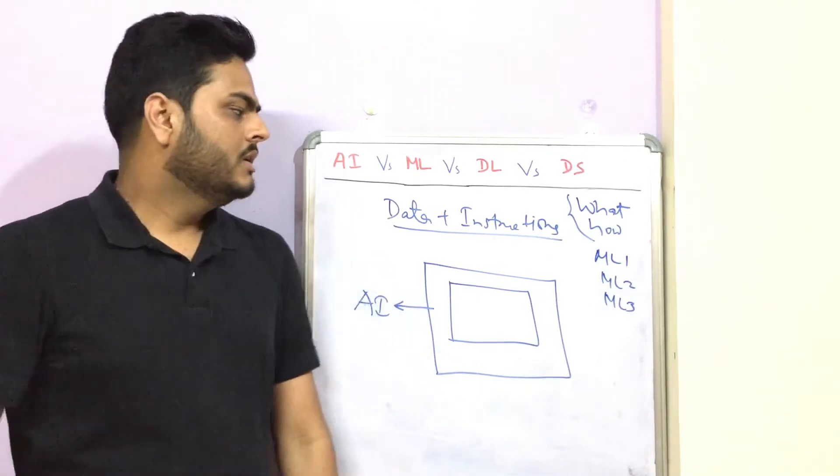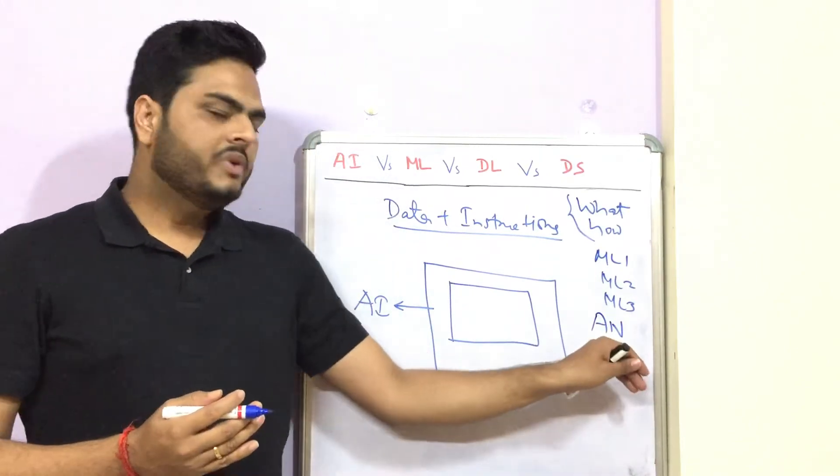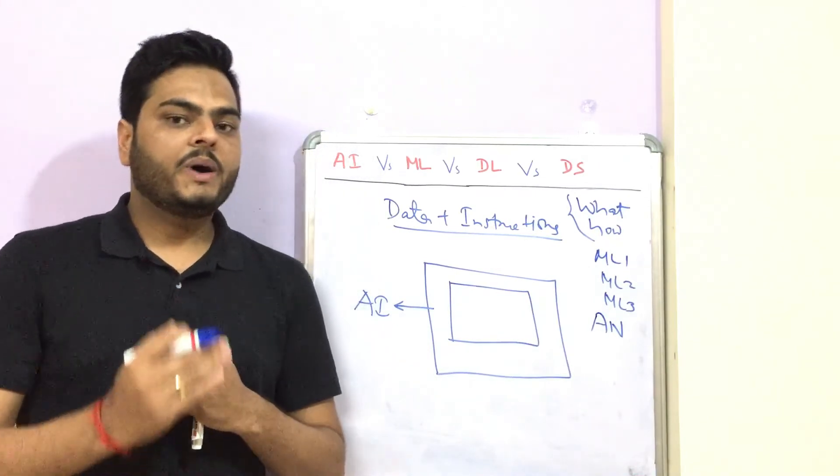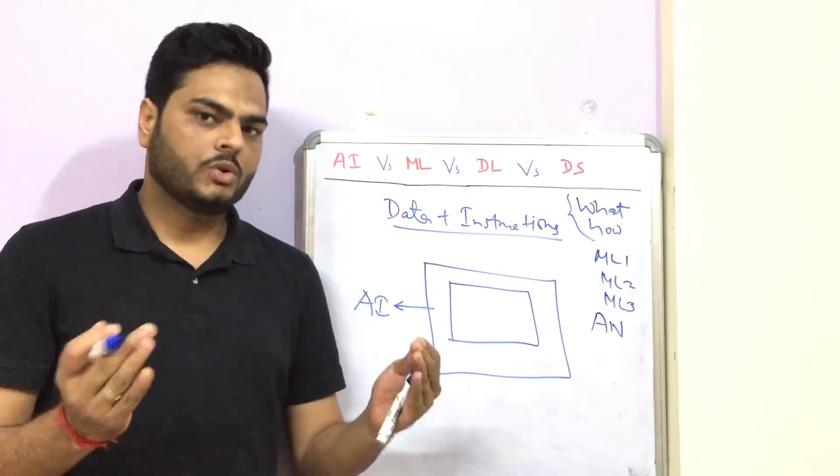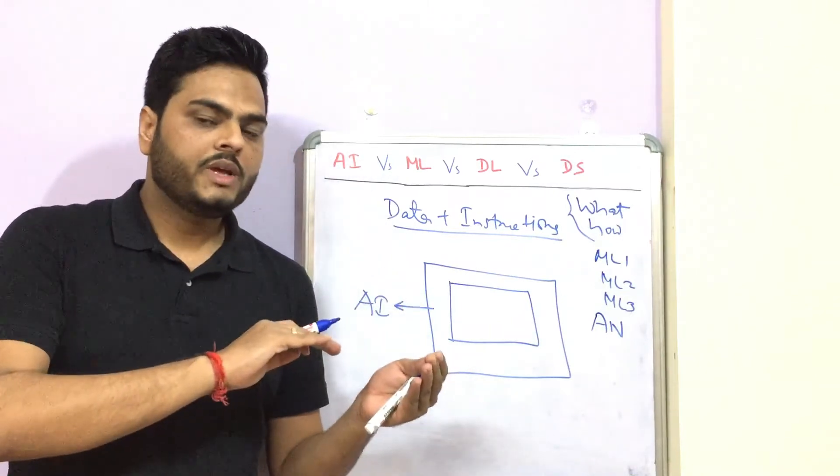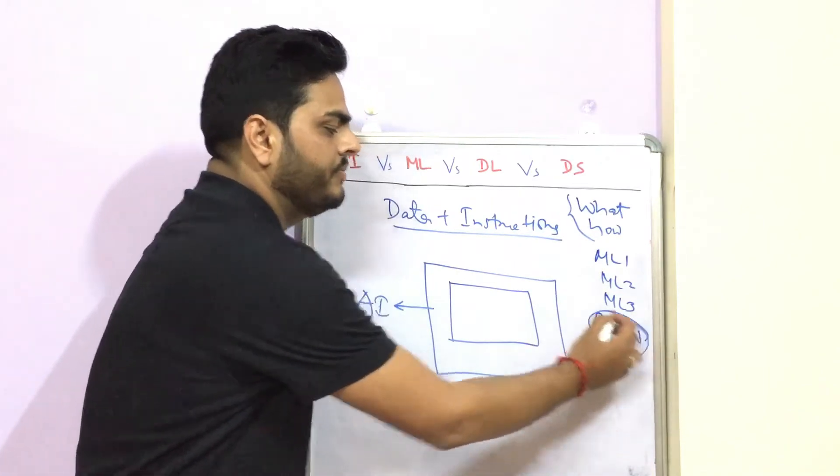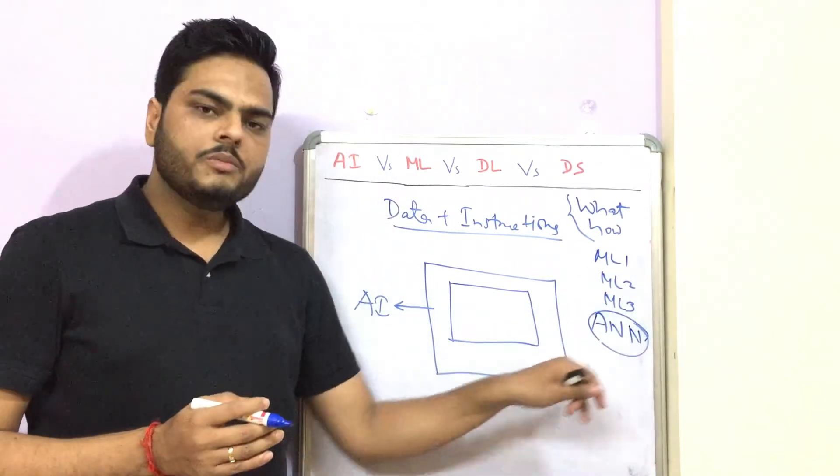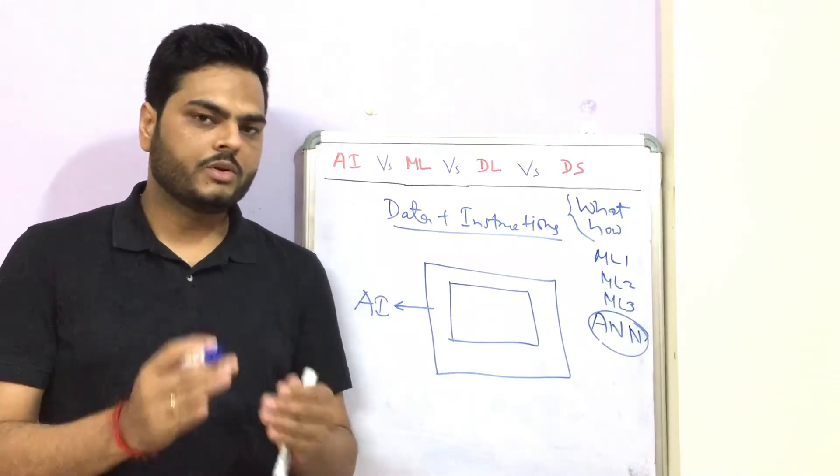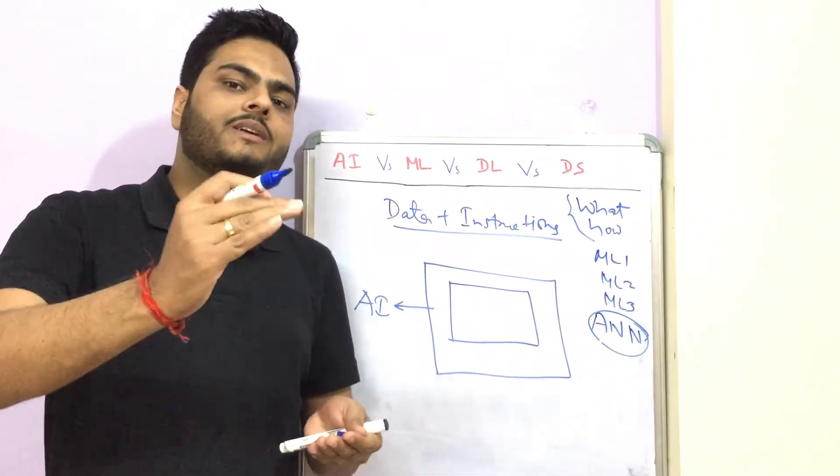This is how biological neuron works. In machine learning there is a technique called artificial neuron. We try to mimic the behavior of biological neuron by creating or by training artificial neurons. And when we have multiple neurons, similar to what we have in our body, then this is called artificial neural network or neural network.